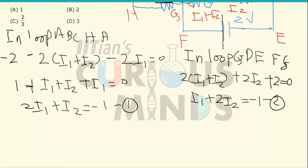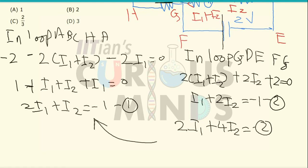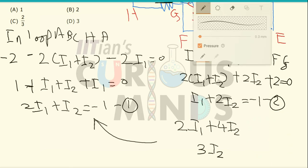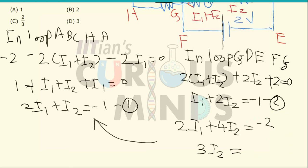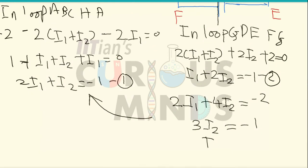Multiplying equation two by 2 gives 2i1 plus 4i2 equals negative 2. Subtracting equation one from this result: 3i2 equals negative 1, so i2 equals negative 1/3.